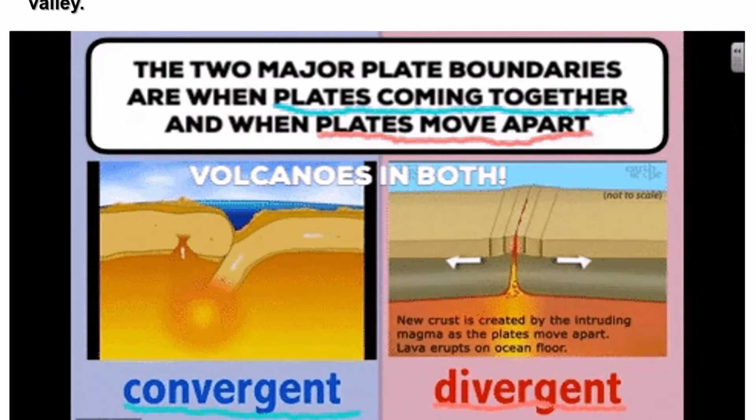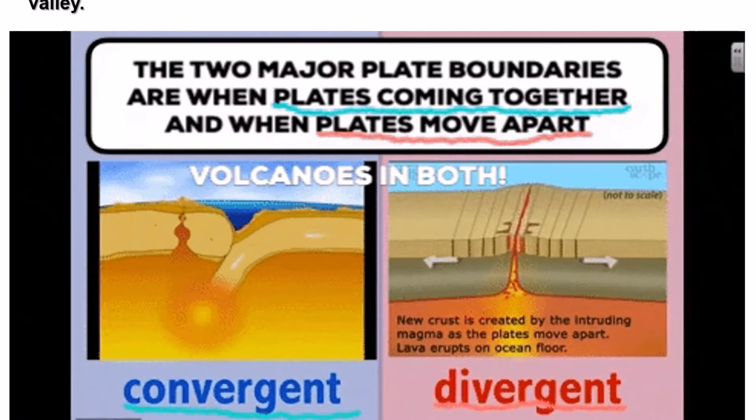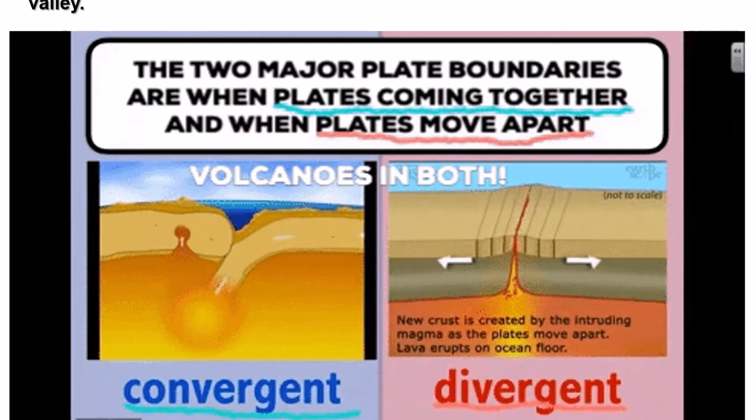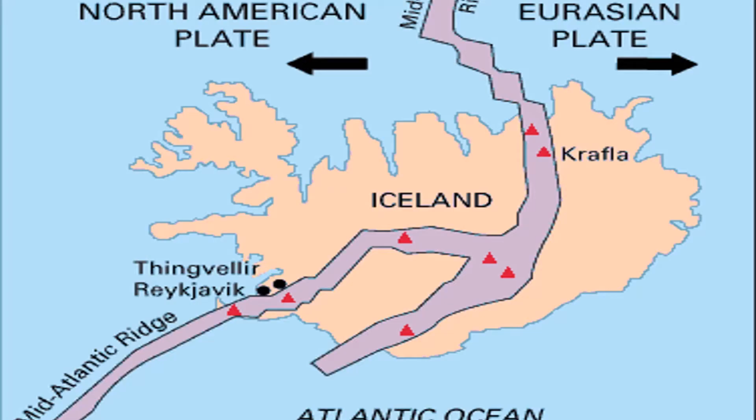Each type of plate boundary generates distinct geologic processes and landforms. At divergent boundaries, plates separate, forming a narrow rift valley. Here, geysers spurt superheated water and magma, or molten rock, rises from the mantle and solidifies into basalt, forming new crust. Thus, at divergent boundaries, oceanic crust is created.